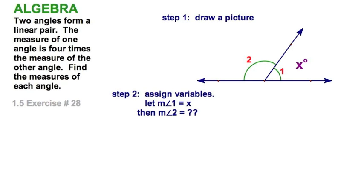I'm going to assign the variable x to that one. I could have assigned x to the larger angle, but you'll see why I chose it this way. Because one angle is four times the measure of the other, angle two is four times as big as angle one. Let's come up with an expression. This angle's x, and we have to say, in terms of x, the other angle is 4x. It's four times as big.